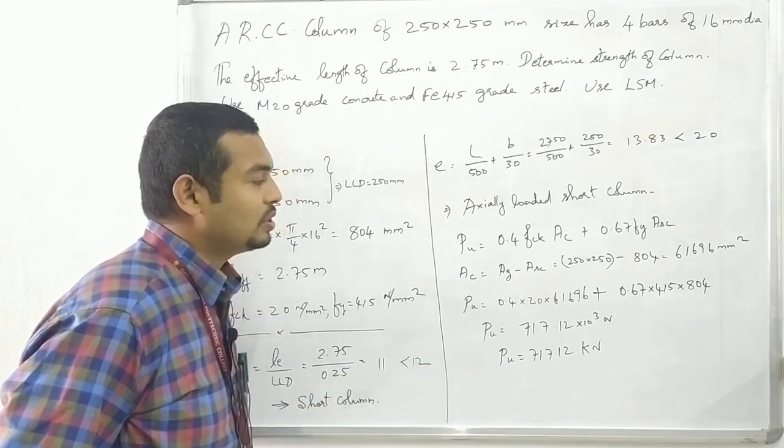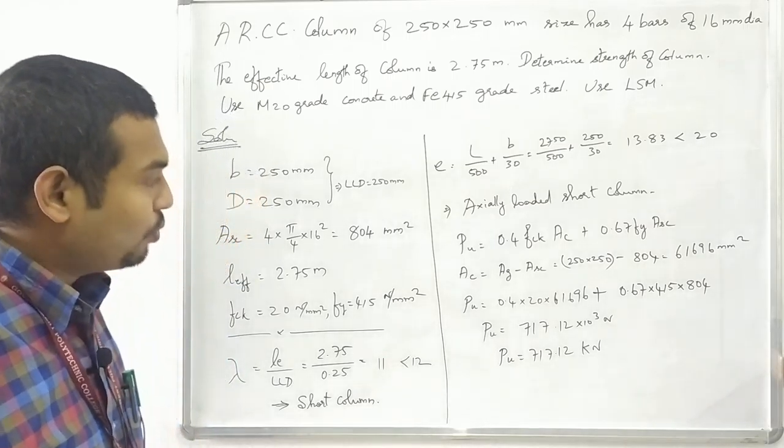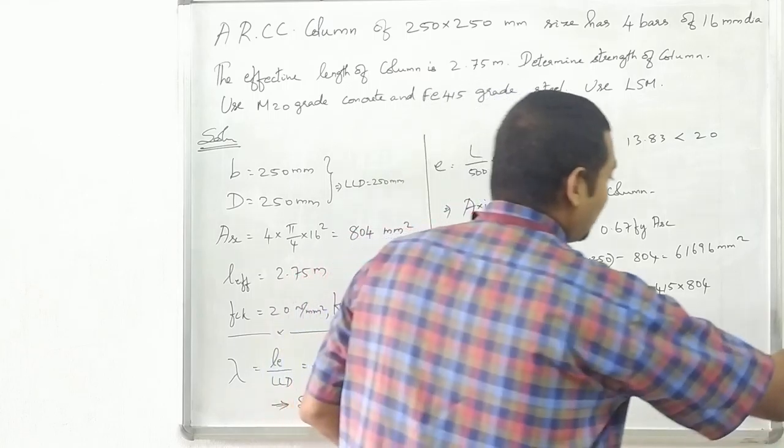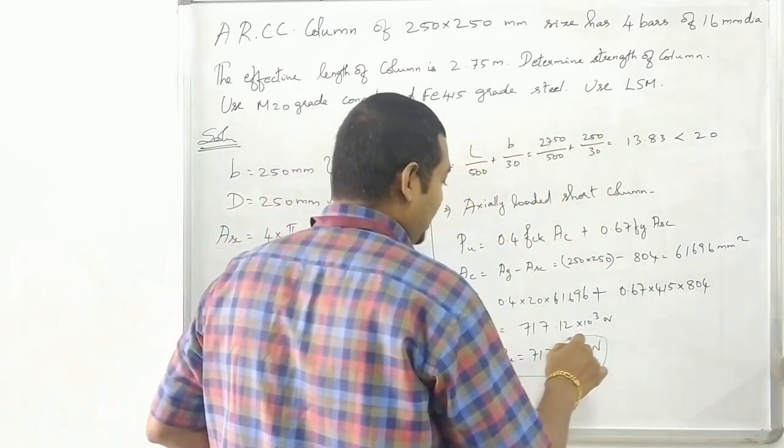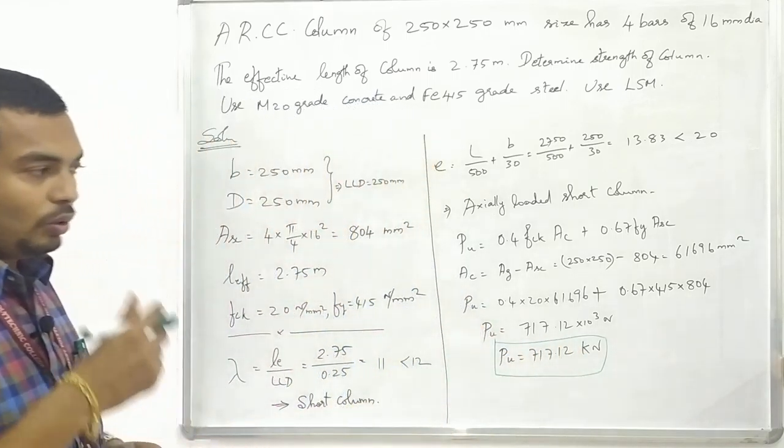Area of concrete is gross area minus steel area. Gross area is 250 × 250, steel area is 804. Subtracting these gives 61,696 mm² as area of concrete.